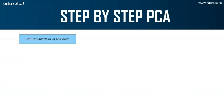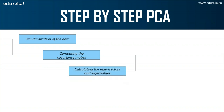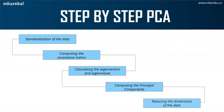You always start by standardization of the data, followed by computing a matrix known as the covariance matrix. Then you calculate what are known as the eigenvectors and the eigenvalues — these are all simple mathematical concepts we learned in college and school. Next, you compute the principal components, followed by which you finally reduce the dimension of your data set depending on the principal components you obtain. Now let's understand each of these steps in a more detailed manner.